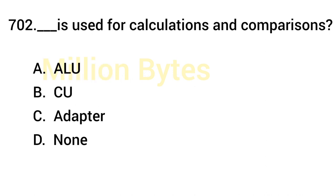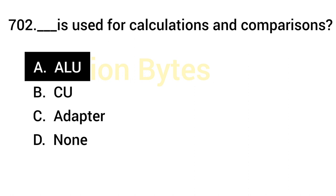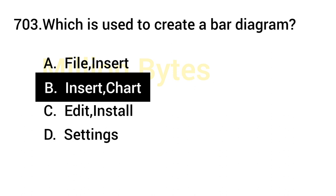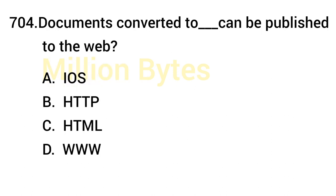Which component is used for calculations and comparisons? Answer is ALU — the Arithmetic Logic Unit. To create a bar diagram in MS Office, the answer is Insert Chart. In the Insert menu, you will find Chart, and by using Chart you can create a bar diagram.